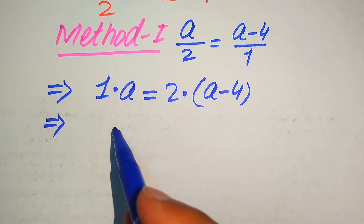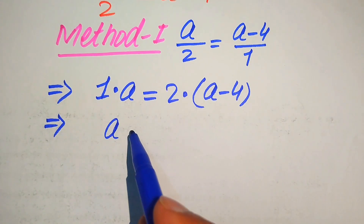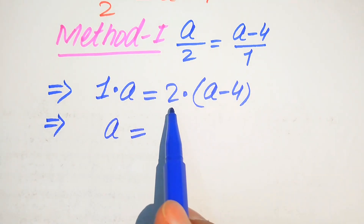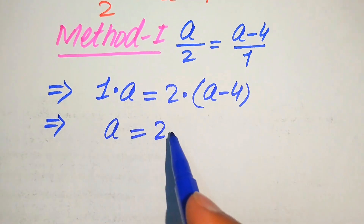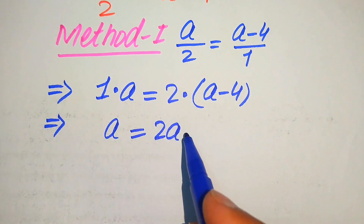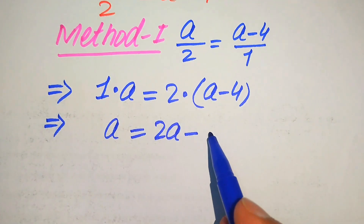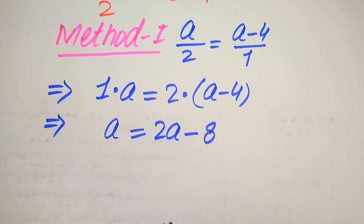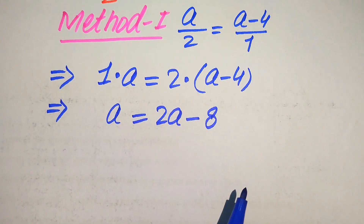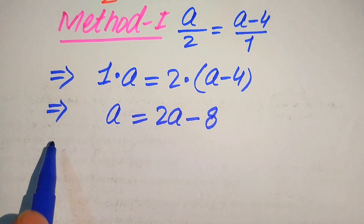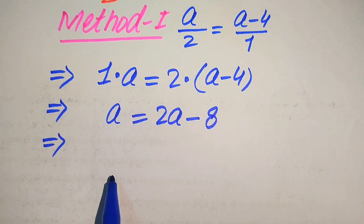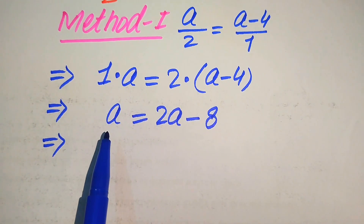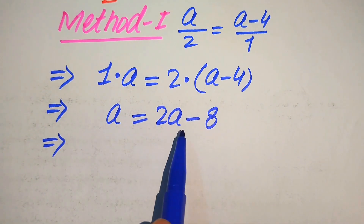1 times a is equals to a, and we multiply 2 with both values, written as 2a minus 2 times 4, which becomes 8. In the next step we need a little more simplification.